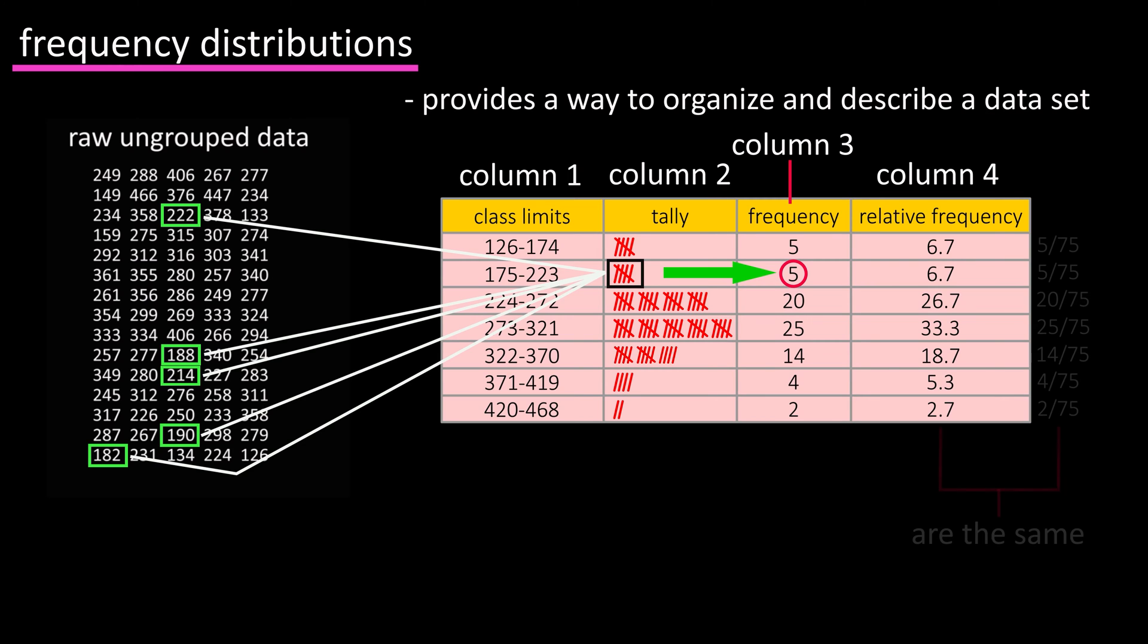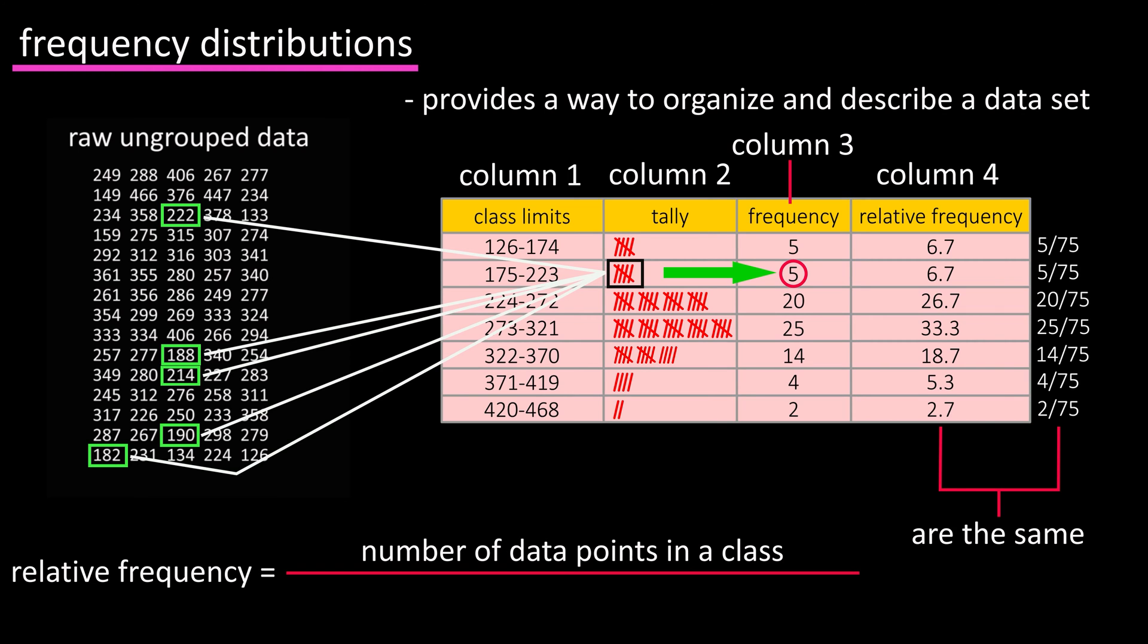The relative frequency is actually a fraction, and it is calculated by taking the number of data points in a given class and dividing that by the total number of data points in the data set.